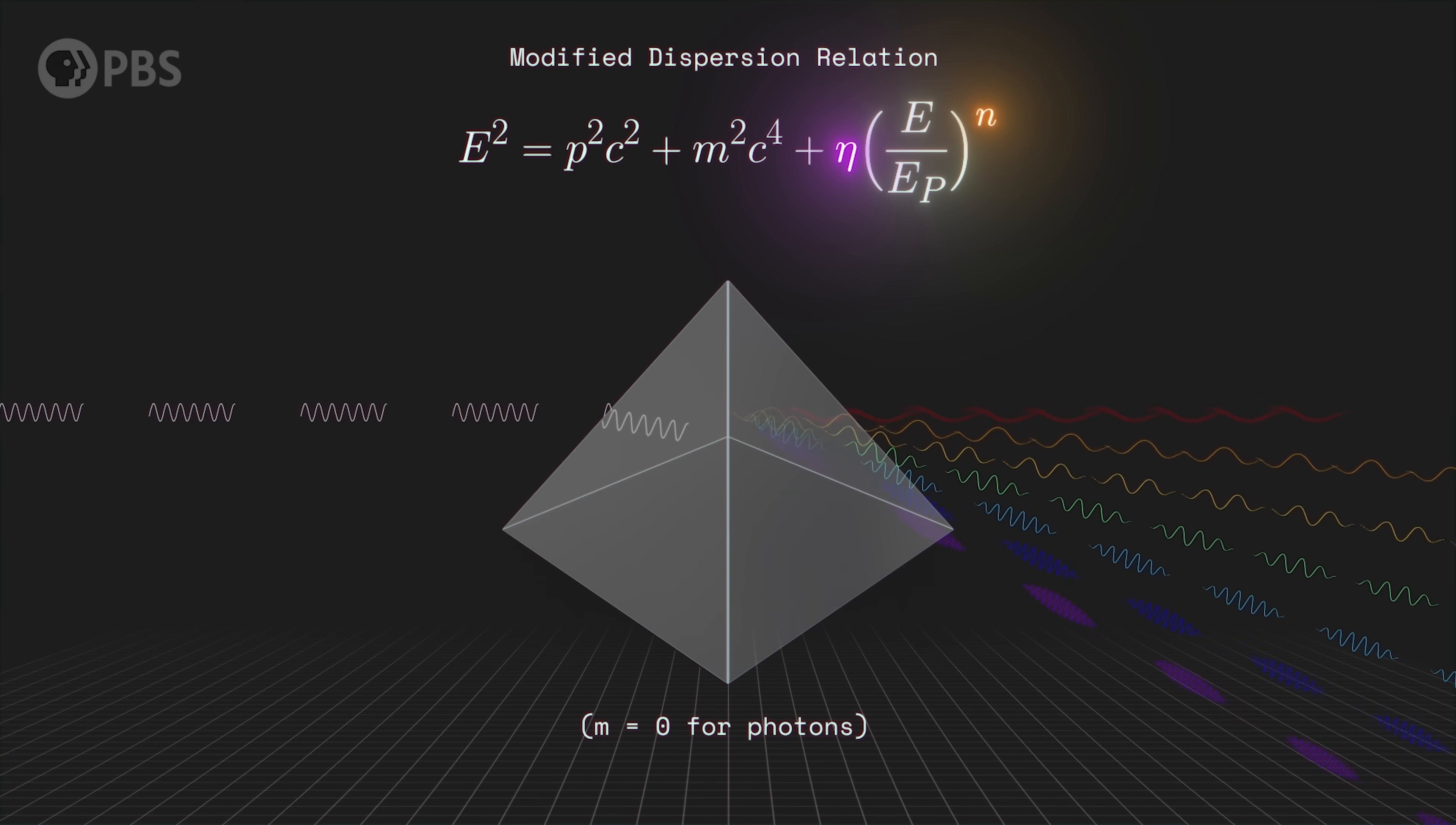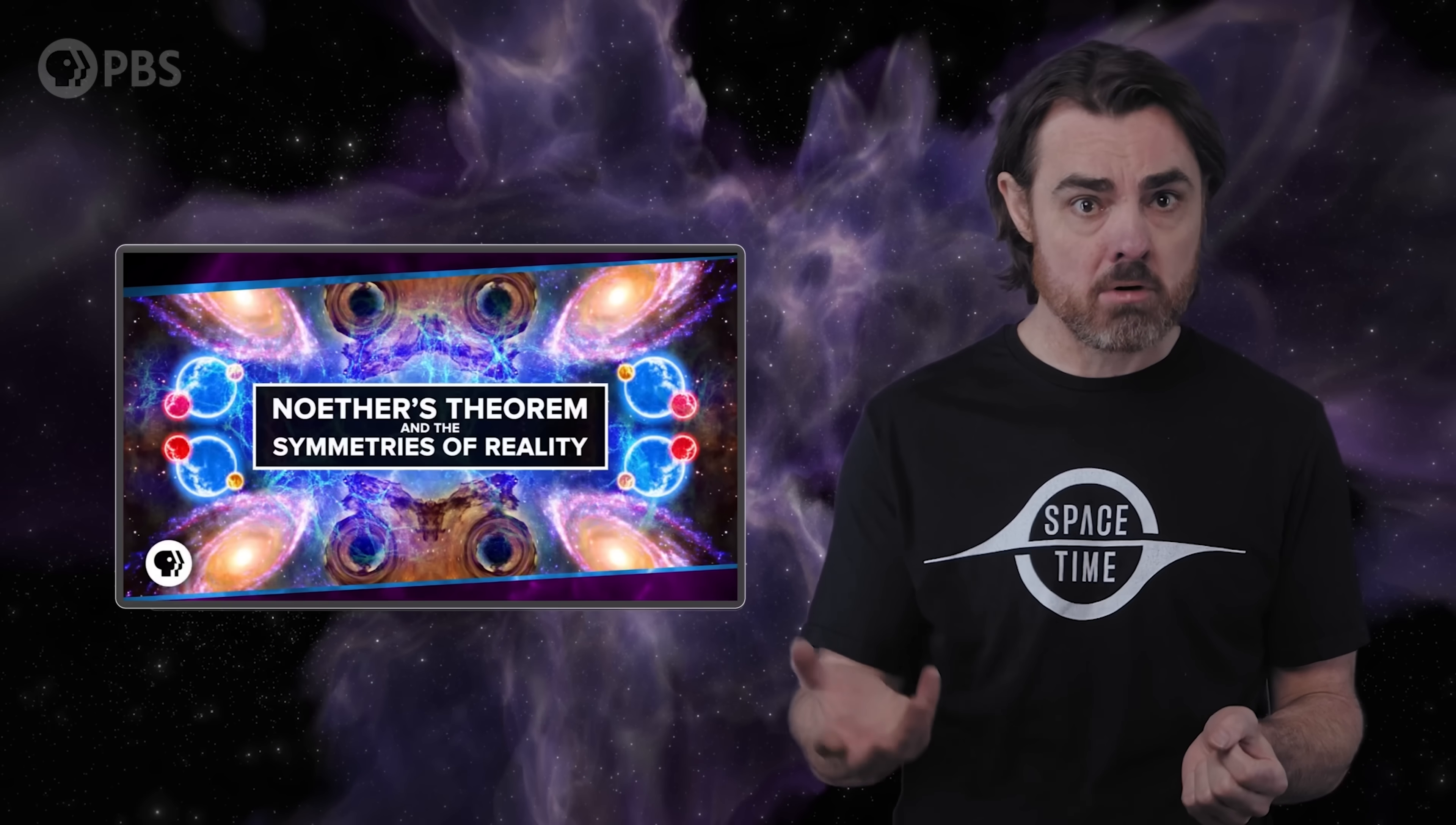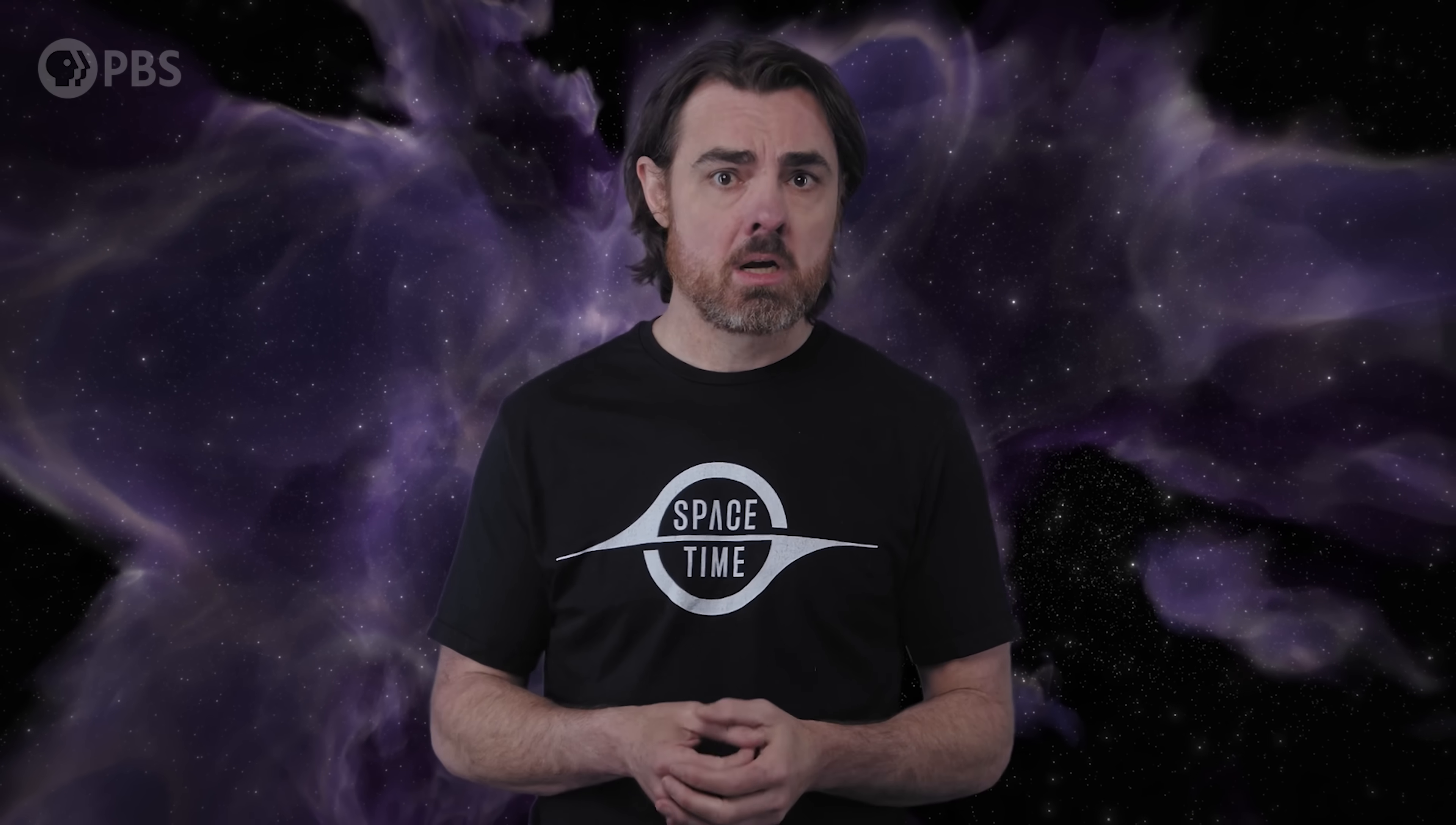For energies much lower than the Planck energy, which means for most of the universe, this part becomes close to zero and so we just have the original dispersion relation, just like how the Lorentz transformation becomes Galilean for velocities much smaller than that of light. The higher the power of this n, the closer you need to get to the Planck energy to observe the effect. And the coefficient, eta, also governs the overall strength of the term. If those terms in the MDR become significant compared to the original terms of the dispersion relation, it would mean that energy and momentum conservation as we know them no longer hold. These conservation laws are a direct result of Lorentz symmetry via Noether's theorem. If Lorentz symmetry is broken, then energy and momentum conservation also break. Which would be fine, we'd end up with a more fundamental symmetry and more fundamental conserved quantities to go with it.